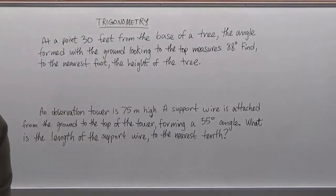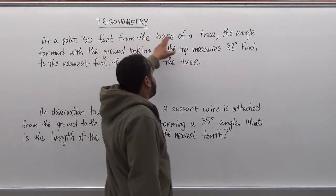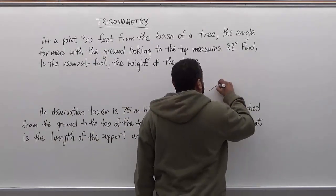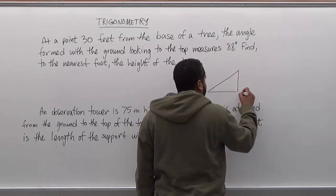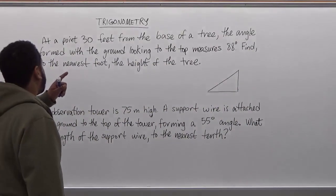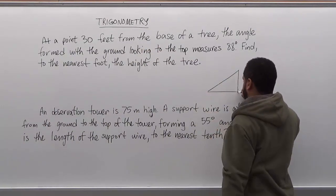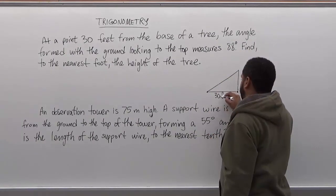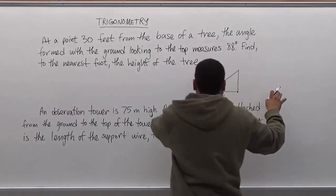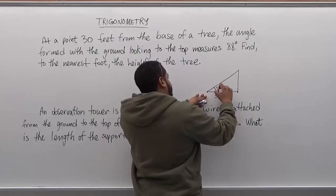When we're setting up this problem we want to get a clear illustration of what's happening. At a point 30 feet from the base of a tree, the angle formed with the ground looking to the top measures 88 degrees. We know we're looking at a point that measures from the base of the ground to the top of the tree — 30 feet from the bottom of the tree to here. It also tells us the angle formed with the ground looking to the top measures 88 degrees.